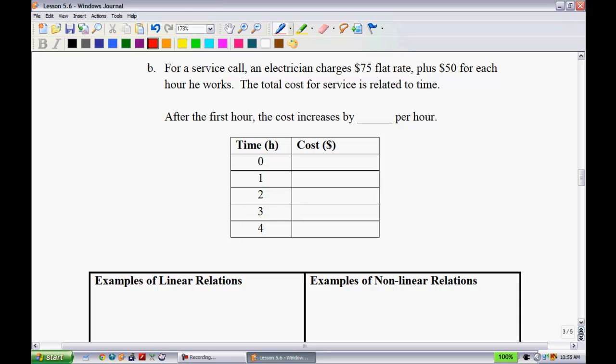For example B, for a service call, an electrician charges a $75 flat rate, plus $50 for each hour he works. The total cost for service is related to time. So after the first hour, the cost increases by $50 an hour. Let's fill this in. Notice how on this side they're going up by plus one every time. Initial cost is $75. Every time an hour elapses he's going to charge $50 more. So we're at 125, 175, 225, and then 275. So since we add 50 every single time going from here down, we would say that this is an example of something that is constant.